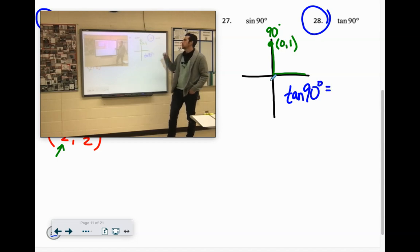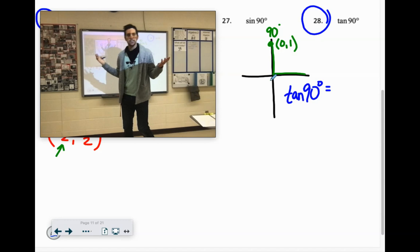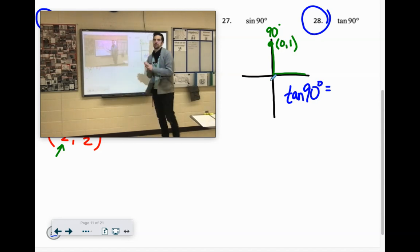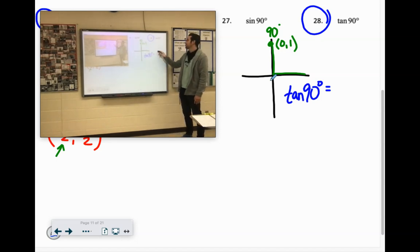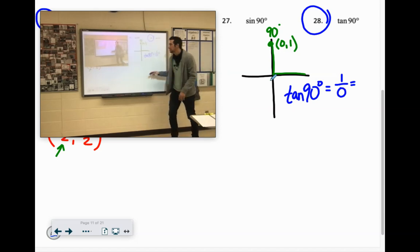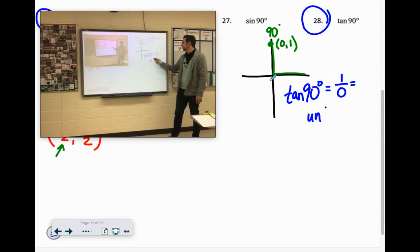And tangent, remember, tangent is y over x. Like why are you trying to hold this over your x? Why is y standing on top of x? So the y coordinate would be one, the x coordinate would be zero. You can't divide by zero, so we're going to write undefined.